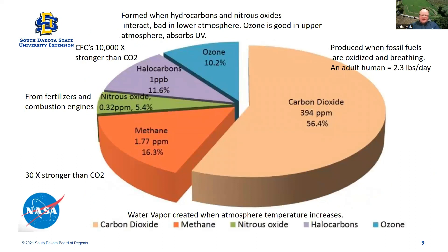Looking at the distribution of greenhouse gases — carbon dioxide, methane, and others — carbon dioxide is really the elephant in the room. But if you look at the pie chart, there's a PPM concentration and a percent. At only 1.77 PPM, methane is 16% of the greenhouse effect — it has a greater effect on increasing the greenhouse effect than CO2. But we're concentrating on all of those as an effort.